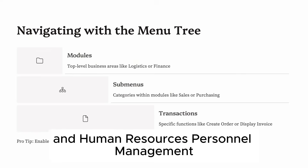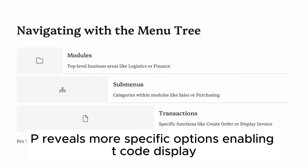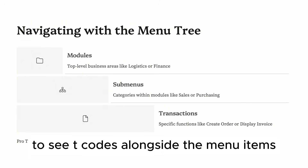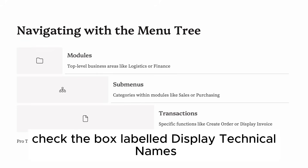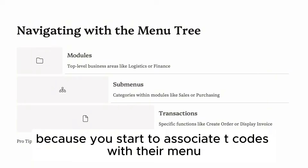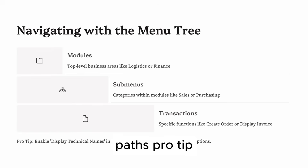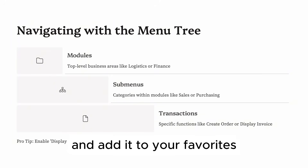And Human Resources → Personnel Management → Master Data → PA30. Each time you click into a folder, SAP reveals more specific options. To enable T-code display and see T-codes alongside the menu items, go to the top menu, click Extras → Settings, and check the box labeled 'Display Technical Names.' This is very helpful when you're learning because you start to associate T-codes with their menu paths. Pro tip: you can right-click on any transaction and add it to your favorites.